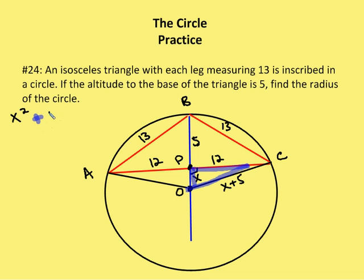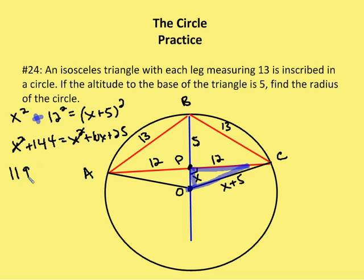Okay, X squared, sorry about that, X squared plus 12 squared is equal to X plus 5 squared. That gives me X squared plus 144 is equal to X squared plus 10X plus 25. I subtract X squared from both sides, that leaves me with 0X squared. I subtract 25 from both sides, that leaves me with 119 is equal to 10X. So X is equal to 11.9, and then my radius is going to be X plus 5. So 11.9 plus 5 gives me 16.9 units as my radius for the circle.